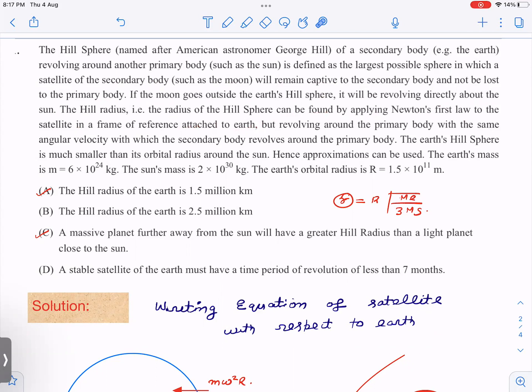The satellite is revolving around the primary body with the same angular velocity with which the secondary body revolves around the primary body, same omega. The Earth's Hill sphere is much smaller than the orbital radius, hence we can use approximations. So we will now calculate the value of Hill radius.